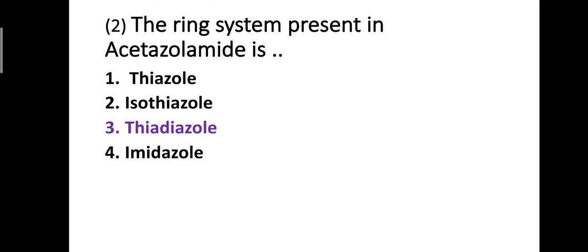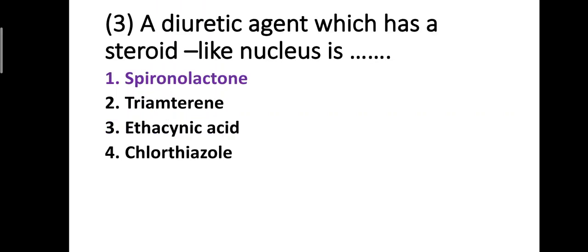Question number two: the ring system present in acetazolamide is — option one: thiazole, option two: isothiazole, option three: thiadiazole, option four: imidazole. The correct answer is option three — thiadiazole ring is present in acetazolamide.